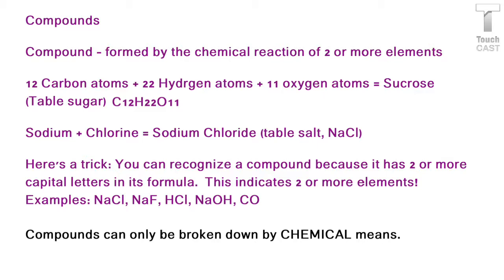Here's a trick for recognizing compounds: you can recognize a compound because it has two or more capital letters in its formula. So in the table sugar formula, we have C for carbon, H for hydrogen, and O for oxygen. In table salt, we have the capital N and lowercase a for sodium, and then capital C and lowercase l for chlorine.